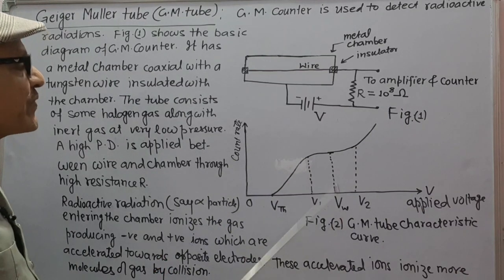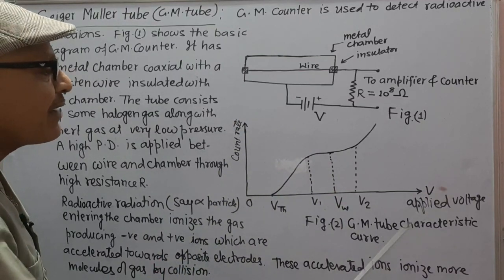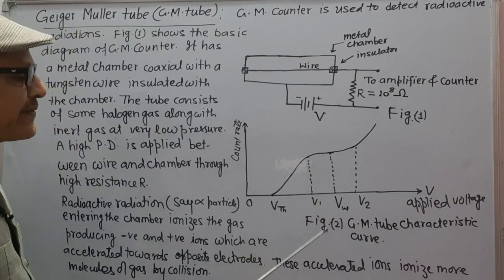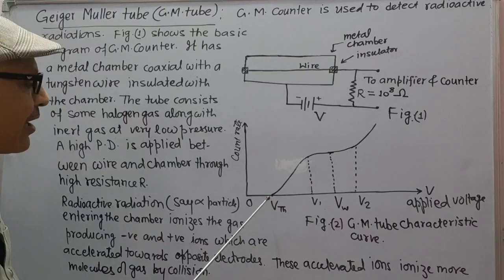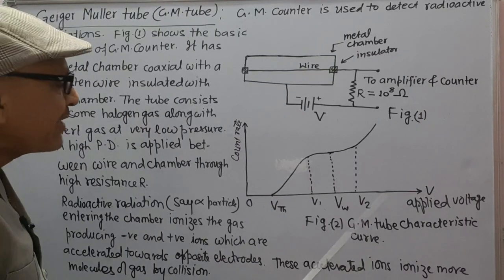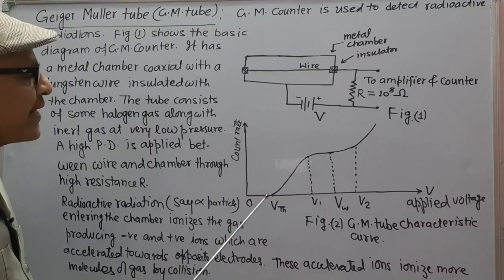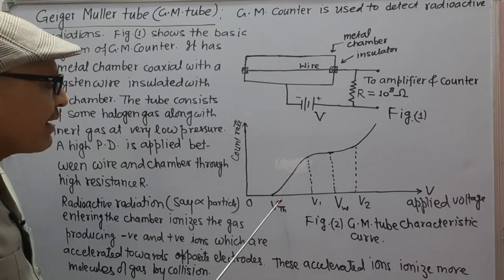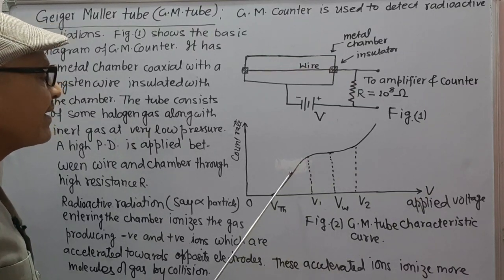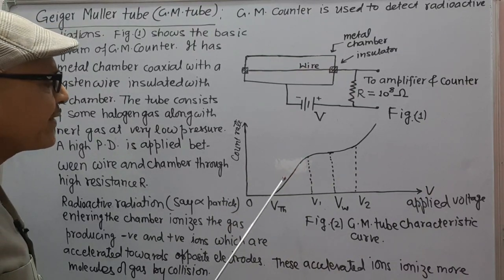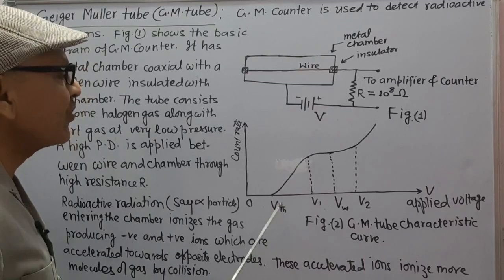Figure 2 shows the count rate and applied voltage graph, which is known as the GM tube characteristic curve. Up to the applied voltage V-TH, the count rate is zero. Beyond V-TH, further increase in voltage, the count rate starts, which indicates that V-TH is the threshold voltage.